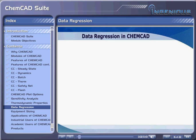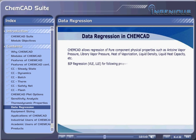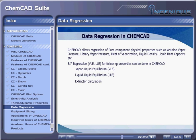Data Regression in ChemCAD. ChemCAD allows regression of pure component physical properties such as Antoine vapor pressure, library vapor pressure, heat of vaporization, liquid density, liquid heat capacity, etc. BIP regression for VLE and LLE for the following properties can be done in ChemCAD: vapor-liquid equilibrium (VLE), liquid-liquid equilibrium (LLE), extractor calculation, regression of solubility data, regression of electrolyte data, and regression of reaction rate data.